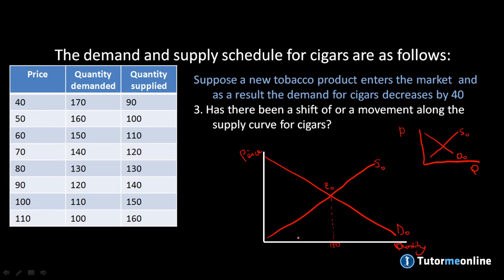Due to this, demand for cigars decreased by 40, bringing us down to 90. The only way we can achieve this movement is through our demand decreasing, which means we have a shift in our demand curve. So we draw D1 and our new equilibrium E1, showing a lower price. To answer the question: there has been a shift of our demand curve, not a movement along the supply curve.